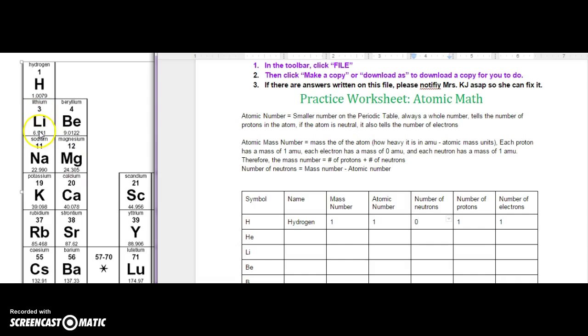Let's go ahead and do Li next. So Li is what element? Lithium. The mass number is 6.941. We want to round it to the nearest whole number. So we only look at the number that is one place value to the right. So we're rounding to the nearest whole number. Does the 9 make it round up or stay the same?